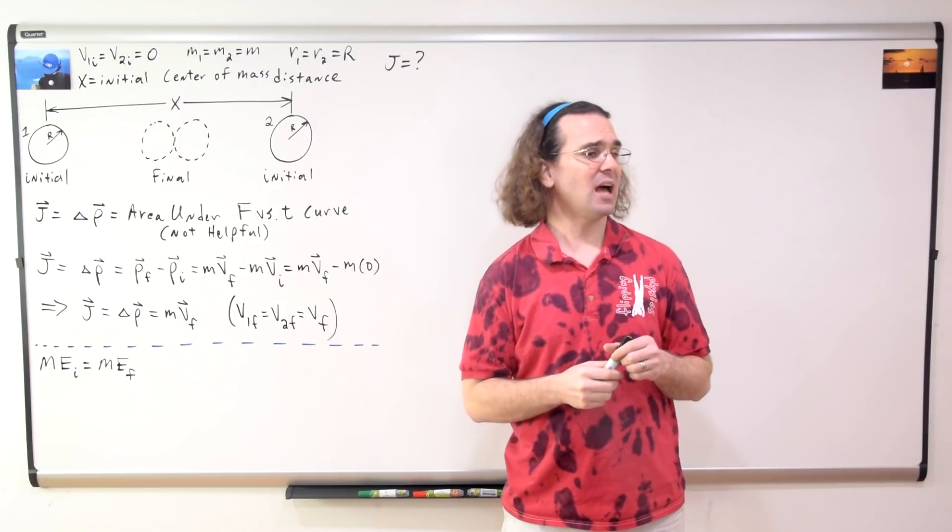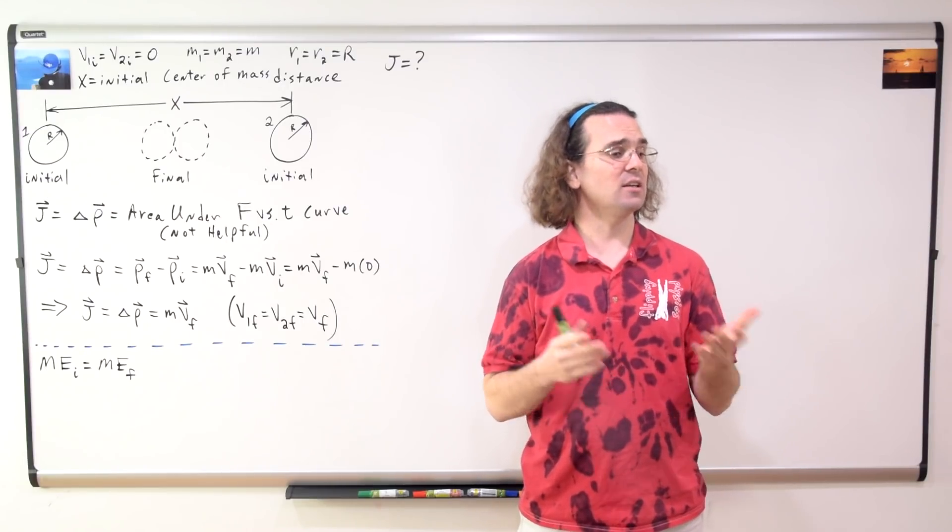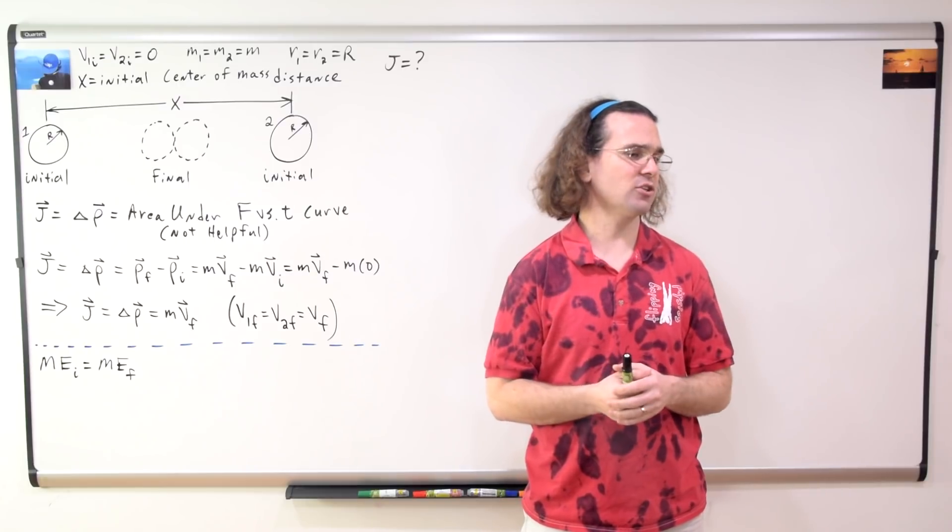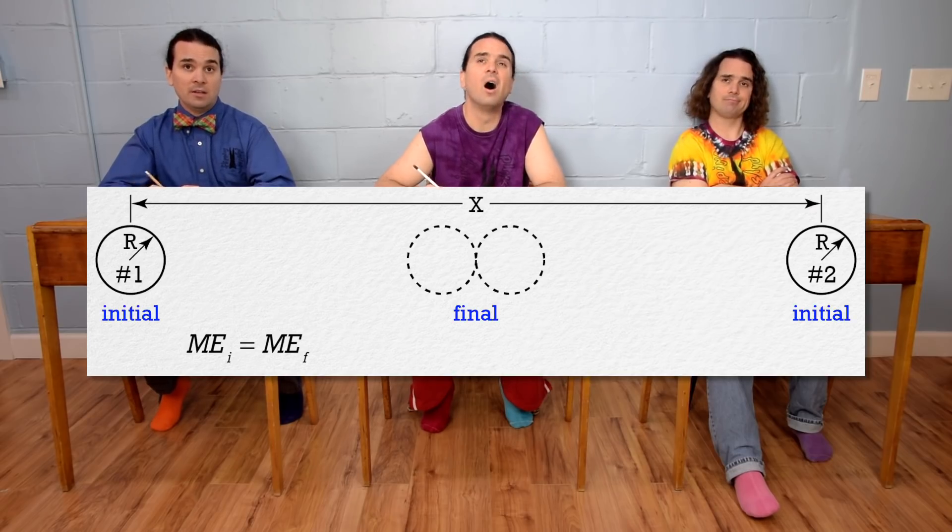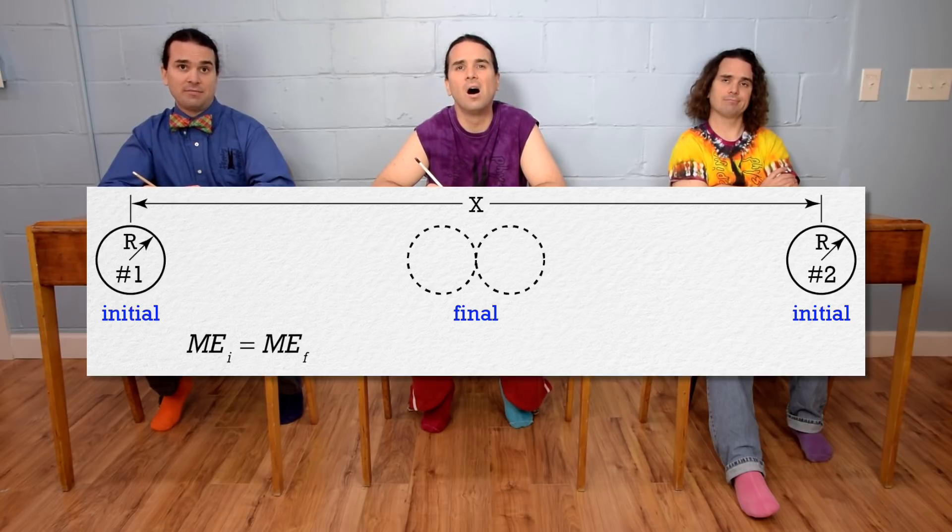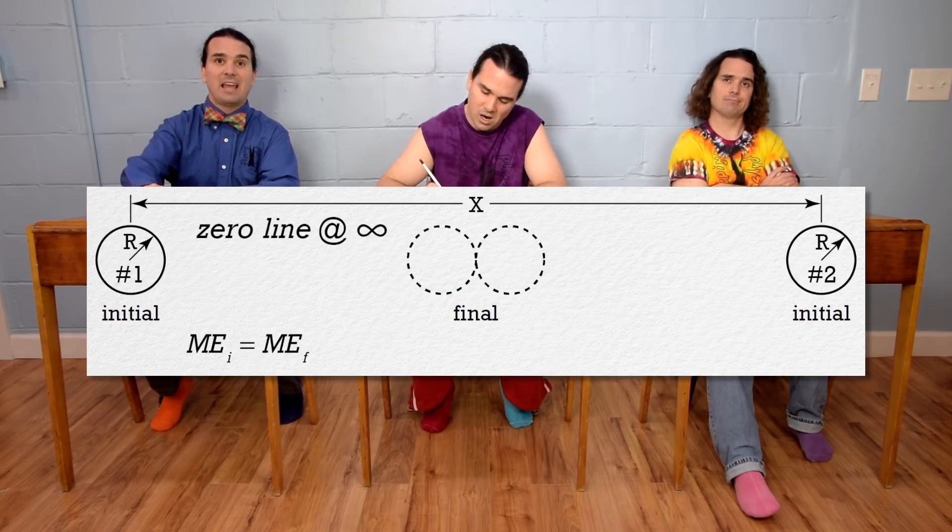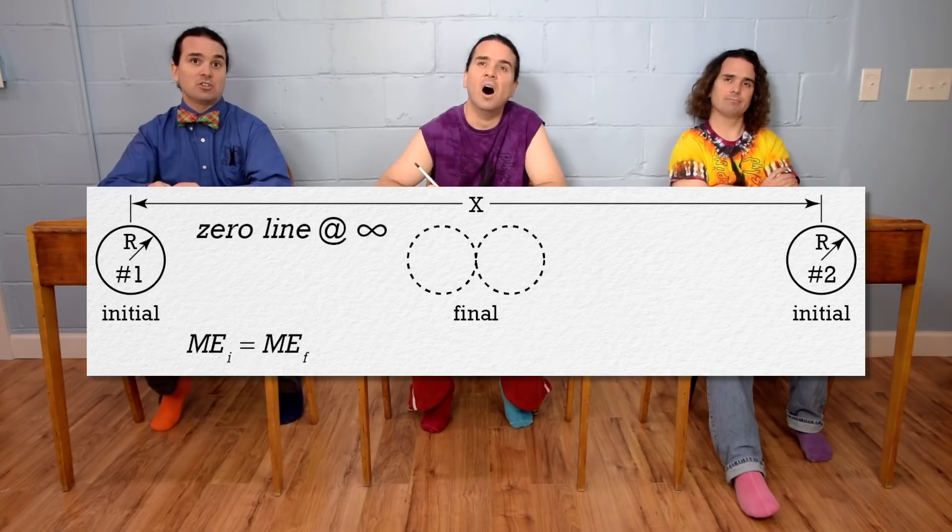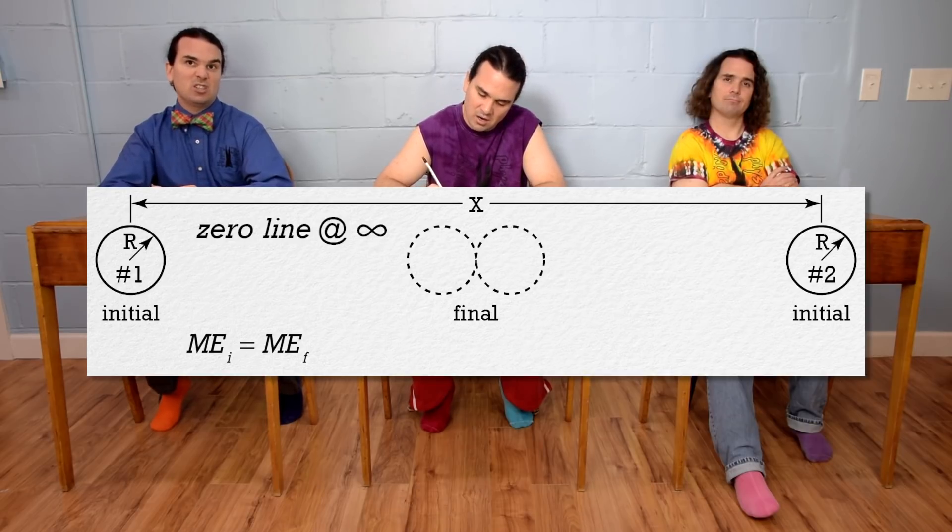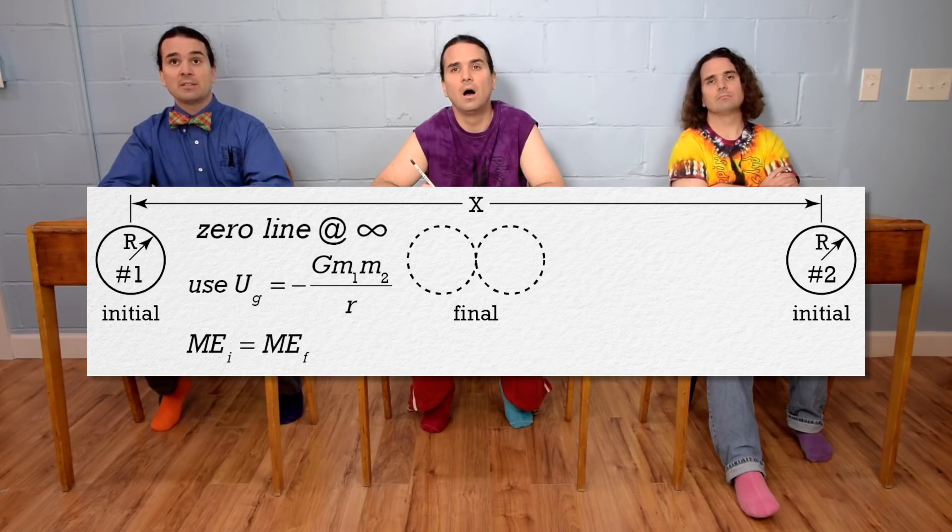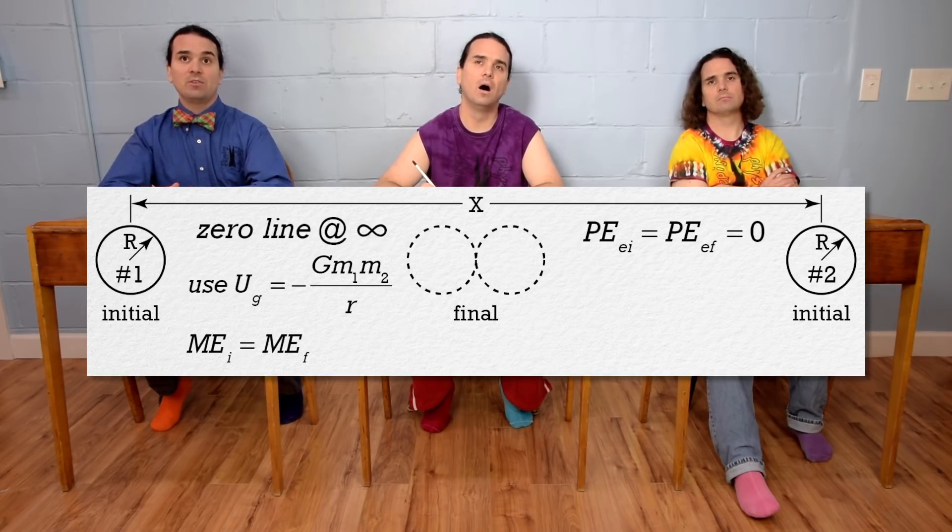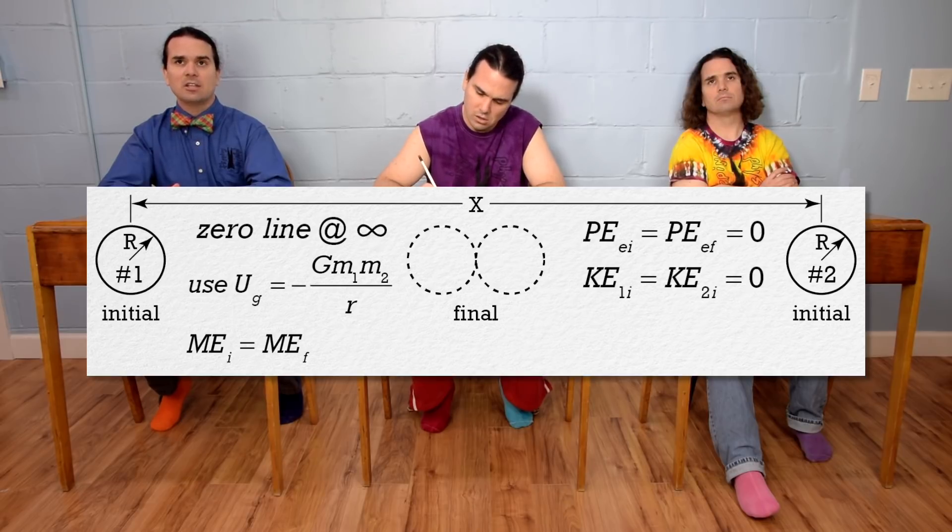Billy, please identify which types of mechanical energy exist initially and finally in this situation, and please substitute in their equations. Okay, the initial and final points are already identified and the zero line is at infinity because the gravitational field is not constant, so we need to use universal gravitational potential energy. There are no springs, so no elastic potential energy initial or final. Initially, both spheres are at rest, so no initial kinetic energy.